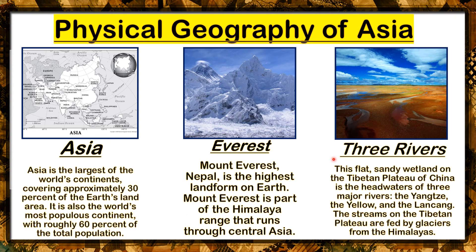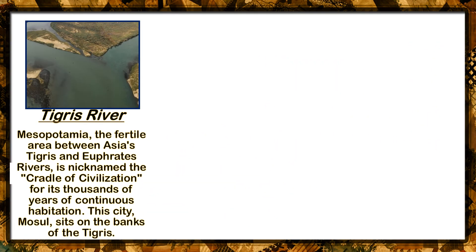Three rivers: this flat, sandy wetland on the Tibetan Plateau of China is the headwaters of three major rivers — the Yangtze, the Yellow, and the Langkang. The streams on the Tibetan Plateau are fed by glaciers from the Himalayas. The Tigris River: Mesopotamia, the fertile area between Asia's Tigris and Euphrates rivers, is nicknamed the Cradle of Civilization for its thousands of years of continuous habitation. The city of Mosul sits on the banks of the Tigris.